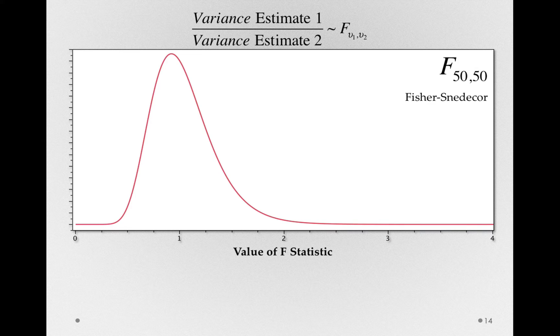The Fischer-Snedeker is simply what would happen in nature if you were to take a variance estimate from one sample, then take another sample from the same population and form another variance estimate. This is simply the shape that would occur.